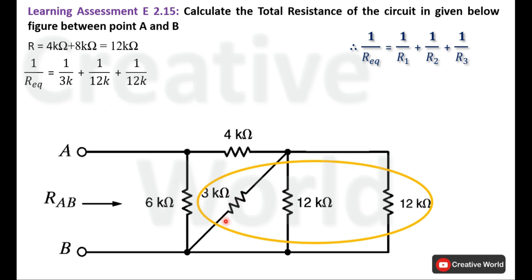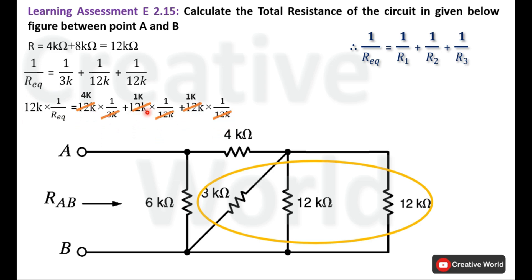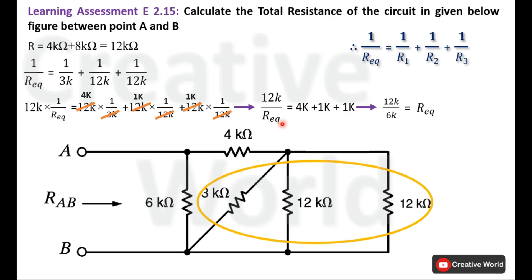Now we solve this equation to find the equivalent resistance. Multiplying both sides by 12k: 12k divided by 3k gives 4, and 12k divided by 12k gives 1, same for the last term. The equation becomes 12k divided by R equivalent equals 4k plus 1k plus 1k, which equals 6k. Placing R equivalent on the other side and dividing by 6k gives R equivalent equal to 2k. So the equivalent resistance of these three parallel resistances is 2k ohm, and we replace them with a single 2k resistance and modify the circuit.